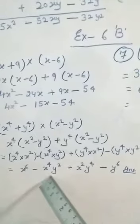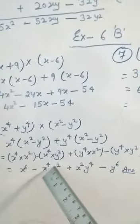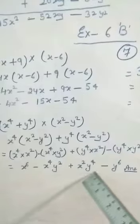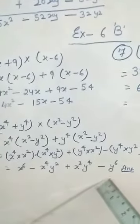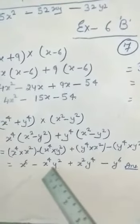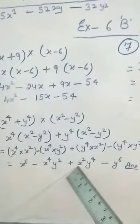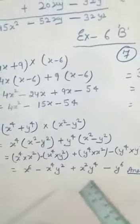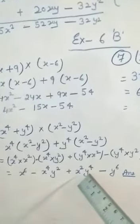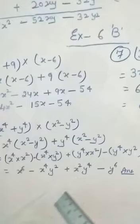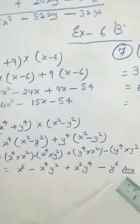So the result is x to the power 6, minus x to the power 4 times y squared, plus x squared times y to the power 4, minus y to the power 6. These are not like terms — x to the power 4 and x squared are different, and y squared and y to the power 4 are different. So this is the final answer. Now question number 14.